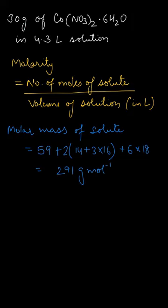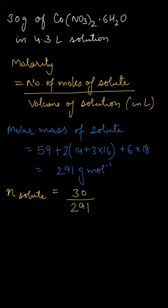We are having 30 grams, so now we can calculate the number of moles. The number of moles of the solute, denoted by small n, is equal to 30 — the given mass — divided by the molar mass, that is 291. On solving, it comes out to be 0.103 mole.